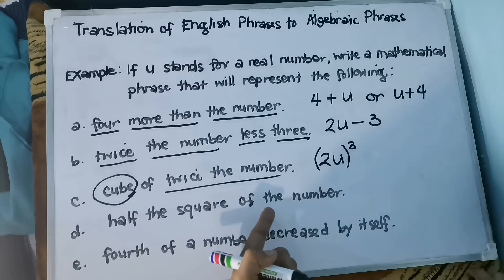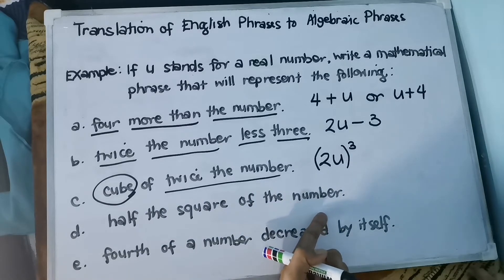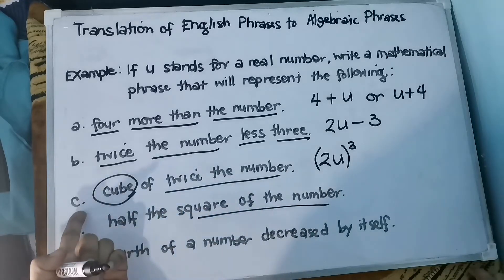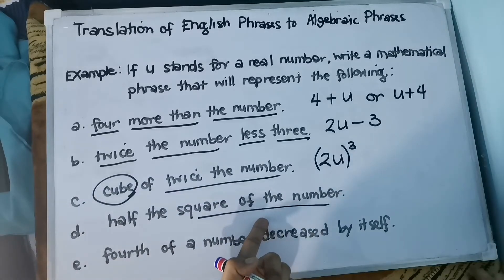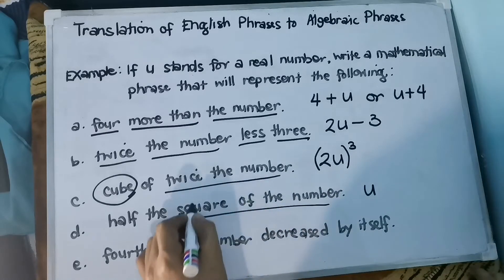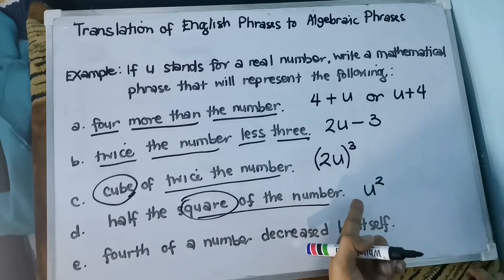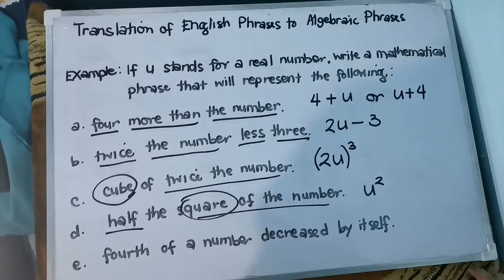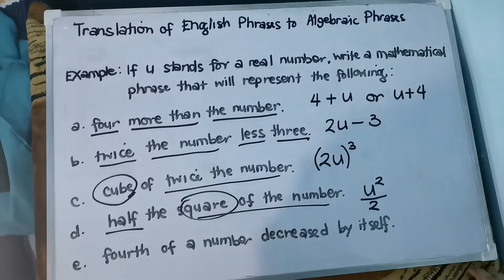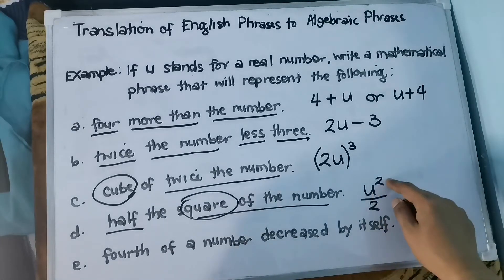For letter D: half the square of the number. Square of the number means we multiply u by itself two times, giving u². Then half means the operation involved is division, so we either multiply by one-half or divide by two. We write it as u² / 2.